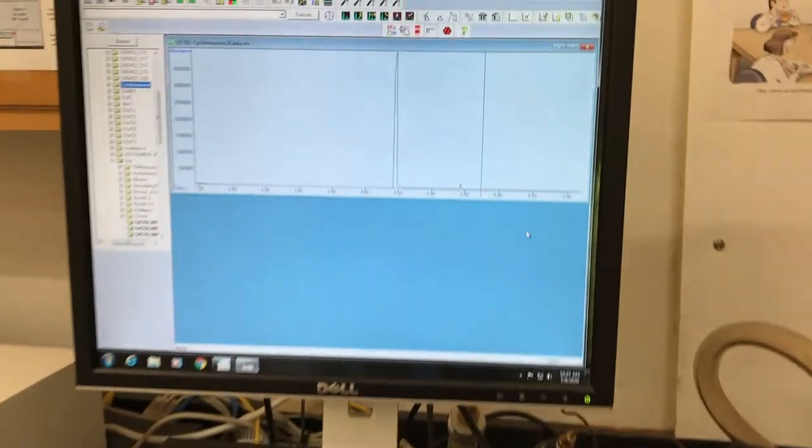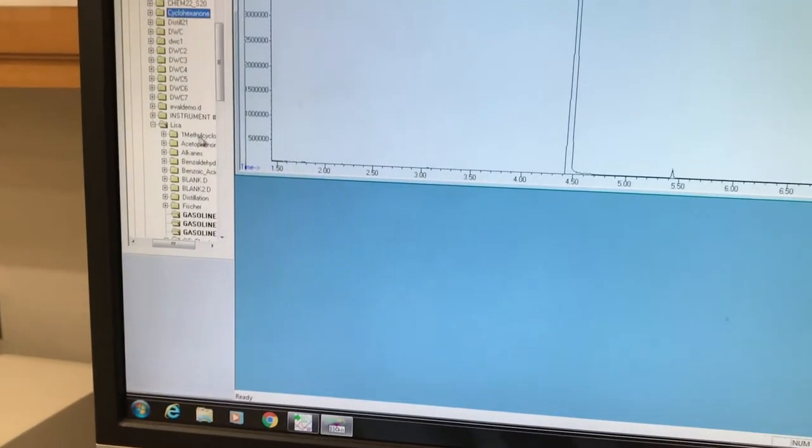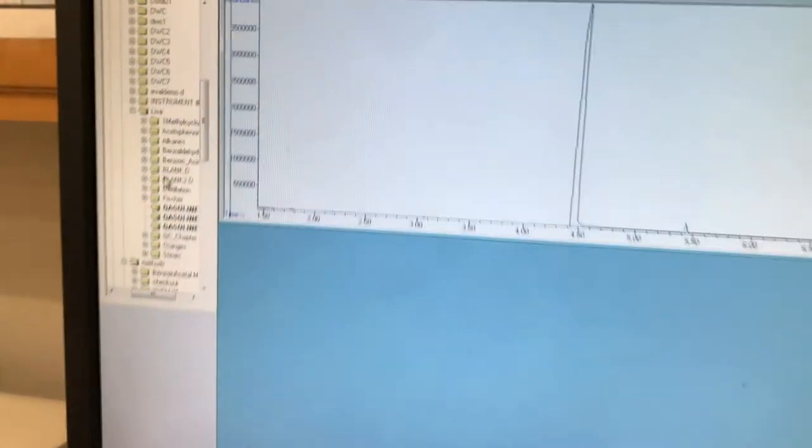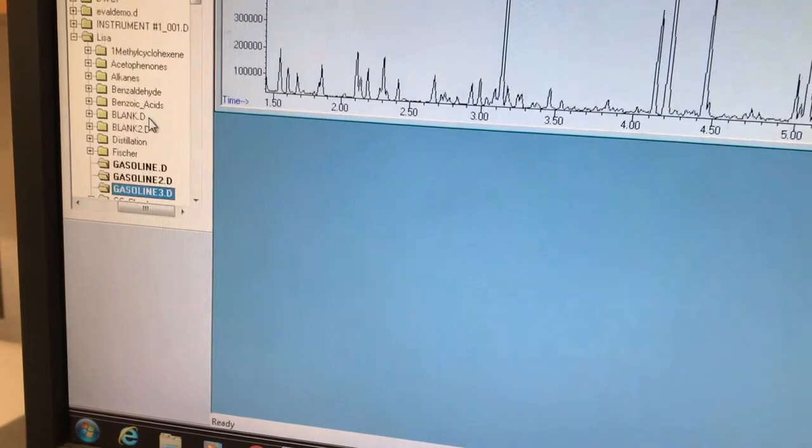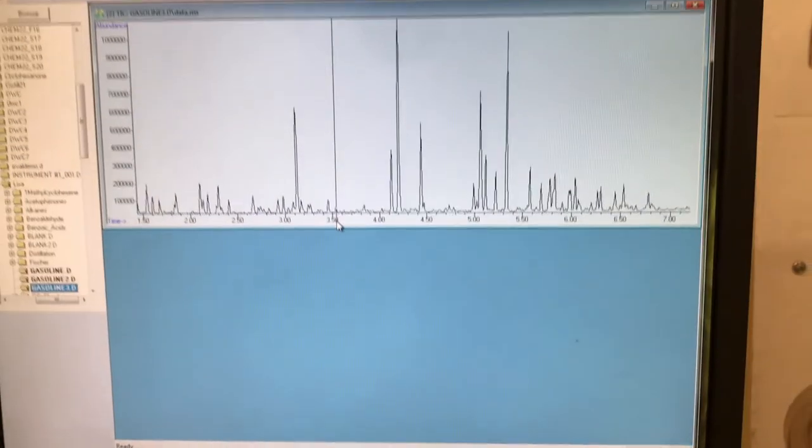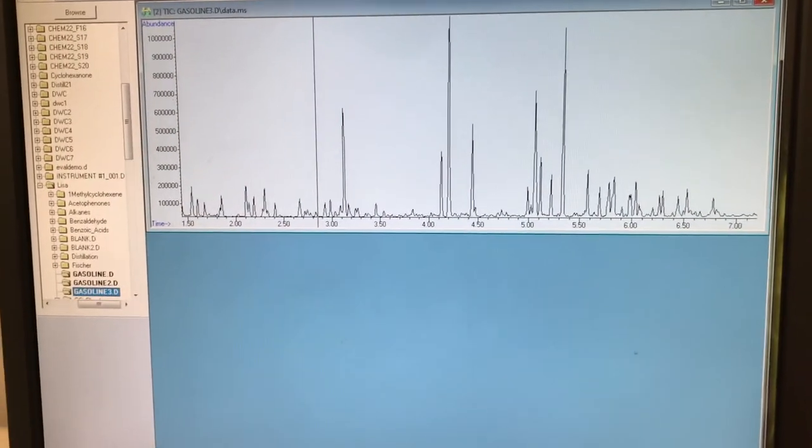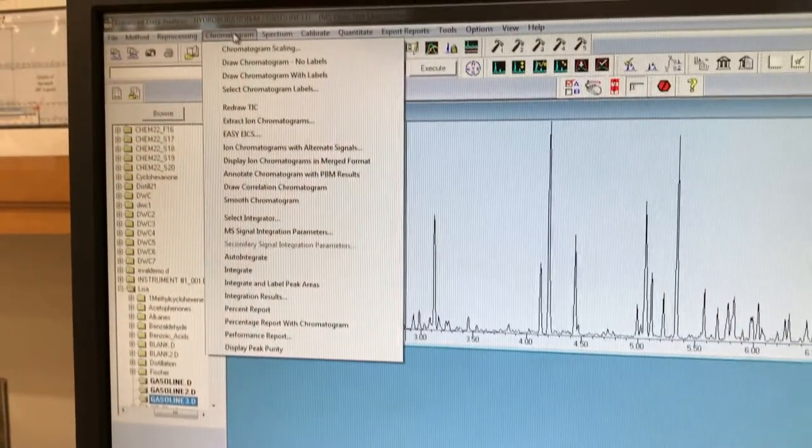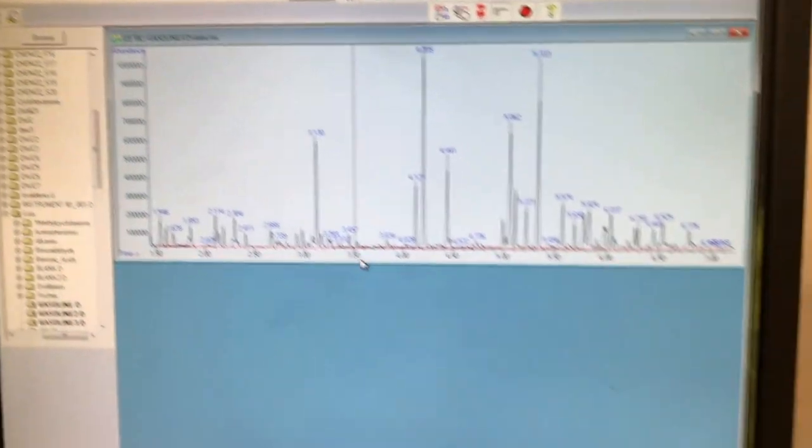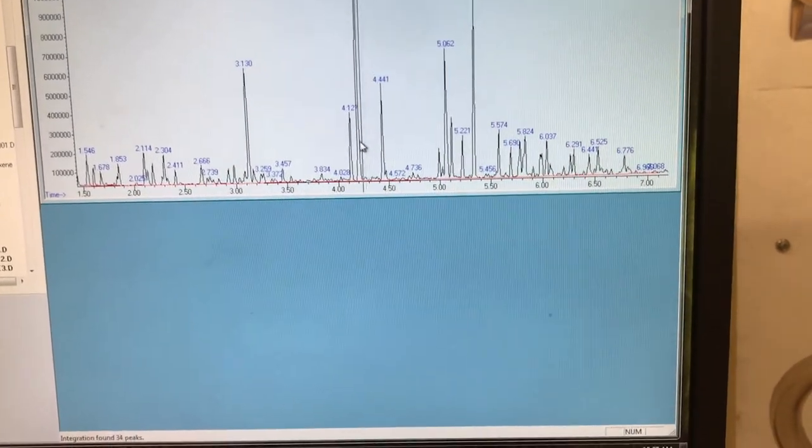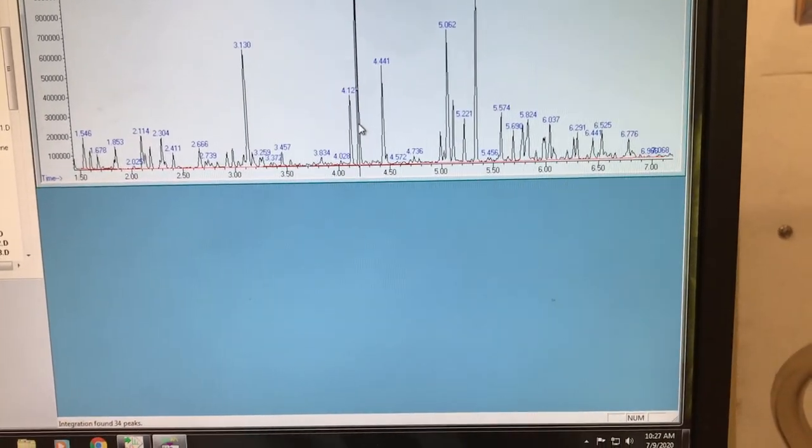So after it's run we then use a different program to analyze it. You find your file on the left and you double click on it. Here I run gasoline a couple times and here is my spectrum. The first thing that I'll do is choose chromatogram integrate and the computer will find the integral under each of the peaks so we can know how much is in each one. It also puts a number on there that marks the retention time.